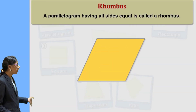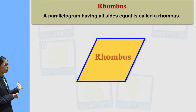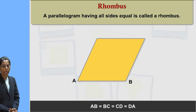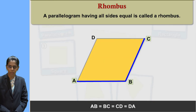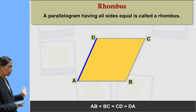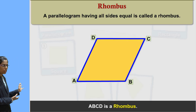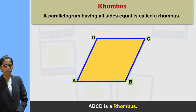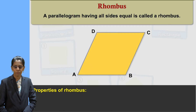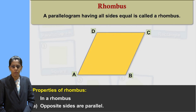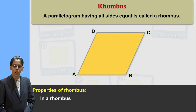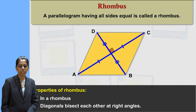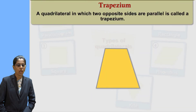Then next point: rhombus. This is rhombus ABCD. A parallelogram having all sides equal is called a rhombus. In the figure ABCD, all four sides are equal — AB is equal to BC is equal to CD is equal to AD. The properties of a rhombus are: all sides are equal, opposite sides are parallel, and diagonals bisect each other at right angles.